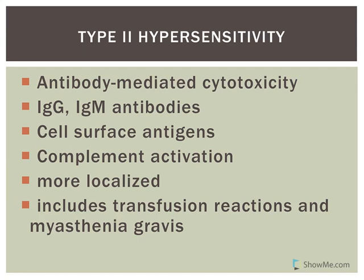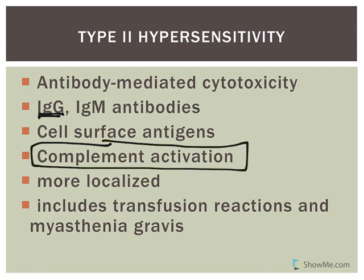Type 2 hypersensitivity is referred to as antibody-mediated cytotoxicity. The effects are damaging to cells and it's mediated through both IgG and IgM antibodies — mostly IgG. The antigens are located on the cell surface. It does involve the activation of complement, which promotes phagocytosis, results in opsonization, increases inflammation, and promotes the formation of a membrane attack complex.